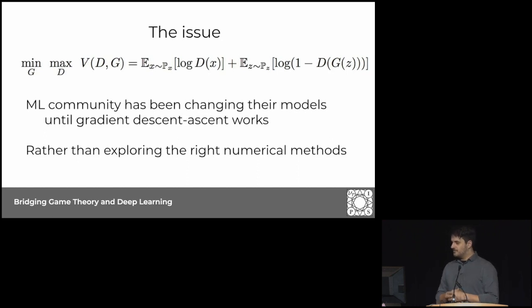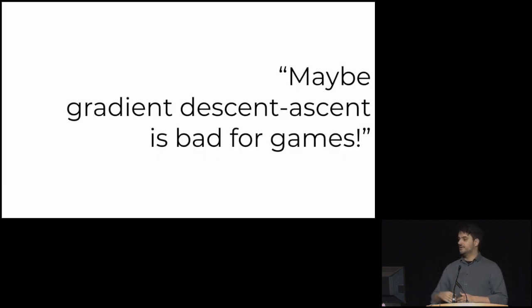The alternative would be for us to explore the methods that are right for the right formulation. In this case, the saturating GAN can be made to work with the right method. Negative momentum is an improvement, but maybe there's something beyond gradient descent ascent. Maybe gradient descent ascent is not the right thing for games.